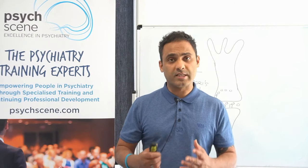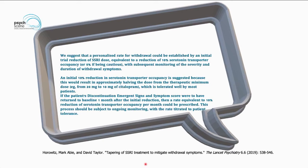Horowitz and Taylor's article on tapering SSRIs stated: a personalized rate for withdrawal could be established by an initial trial reduction equivalent to a 10% reduction in serotonin transporter occupancy, or 5% if being cautious, with subsequent monitoring of severity and duration of withdrawal symptoms. An initial 10% reduction in serotonin transporter occupancy is suggested because it approximately halves the dose from the therapeutic minimum — from 20 mg to 10 mg of citalopram — which is tolerated well by most patients. If the patient's DESS score returns to baseline one month after the initial reduction, a rate of 10% reduction in serotonin transporter occupancy per month could then be prescribed.